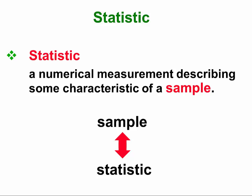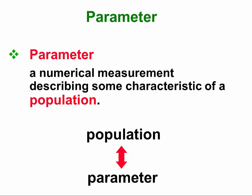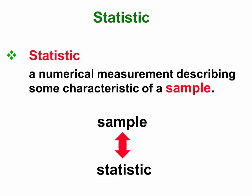A parameter is a number dealing with a population, for example, a population average. A statistic is the same number as it relates to a sample.